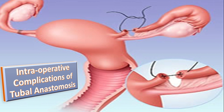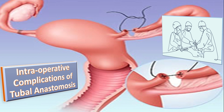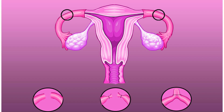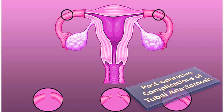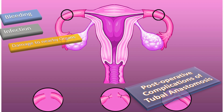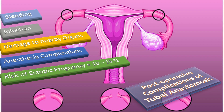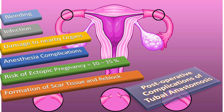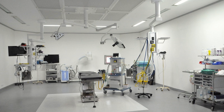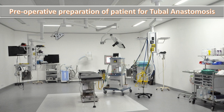The intraoperative complications of tubal anastomosis include: difficult surgery due to disparity in size and gap, and failure of the procedure. The postoperative complications include bleeding, infection, damage to nearby organs, anesthesia complications, risk of ectopic pregnancy — which occurs in 10 to 15% of cases — formation of scar tissue, and re-blockage.